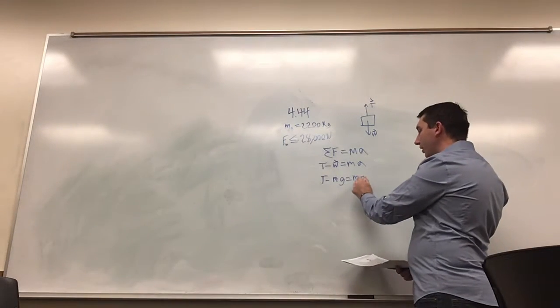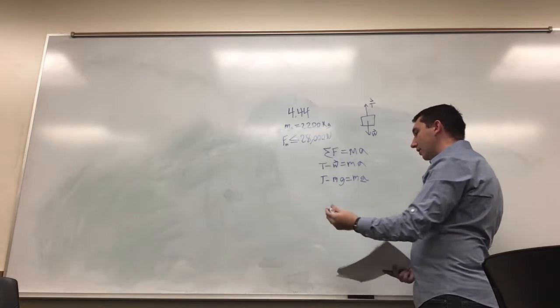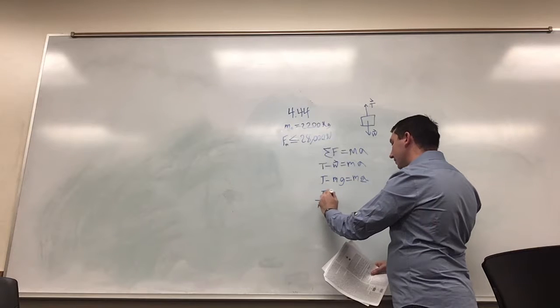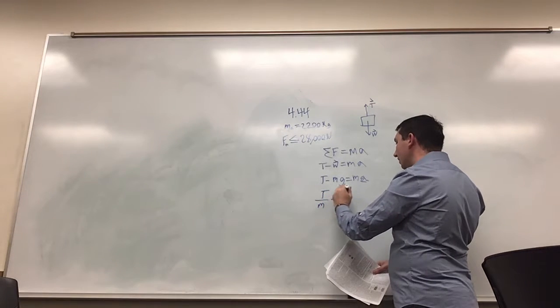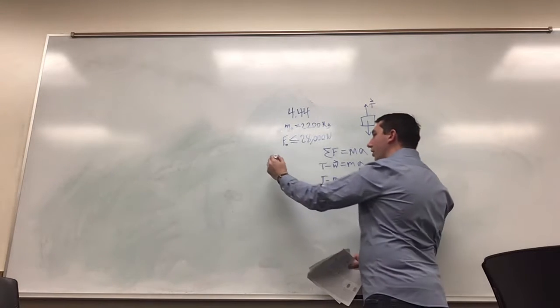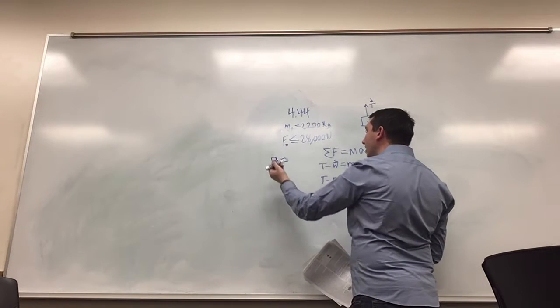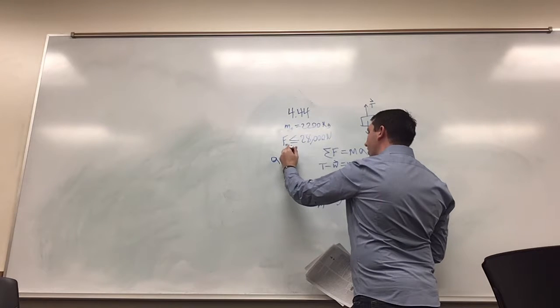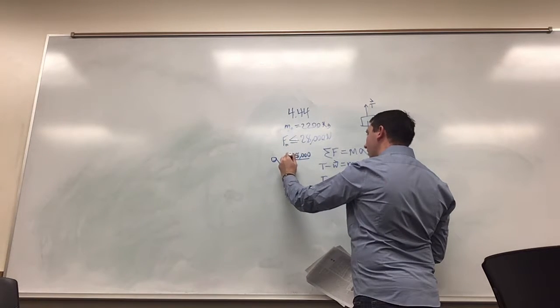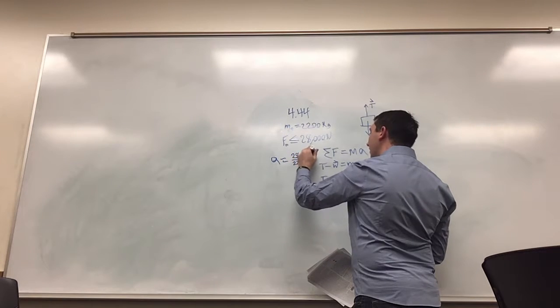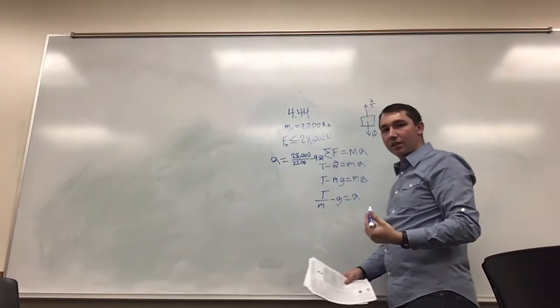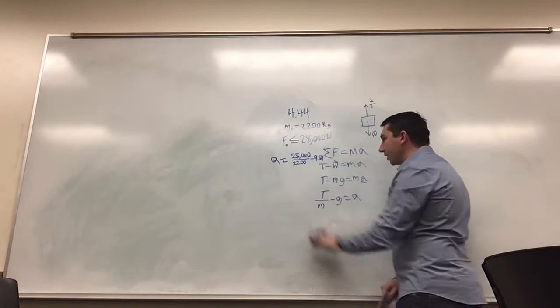And then we want to find the maximum upward acceleration, so we're going to isolate for this, which becomes the tension divided by the mass minus gravity. So our acceleration is going to be equal to 28,000 divided by 2200 minus 9.8, the acceleration of gravity.